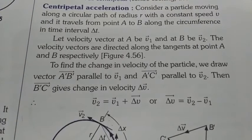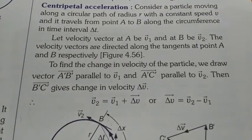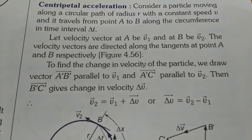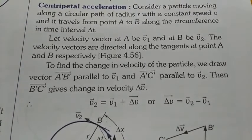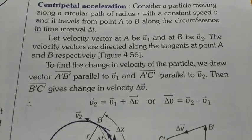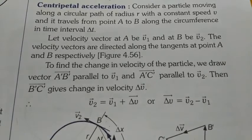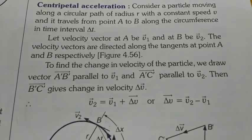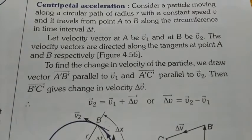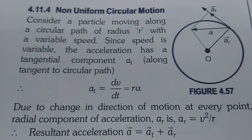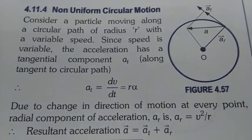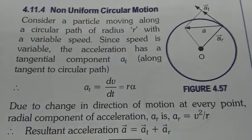So while studying this topic we understood why centripetal acceleration is named so, and we have derived the equation for centripetal acceleration. Now the last topic of this chapter is non-uniform circular motion.